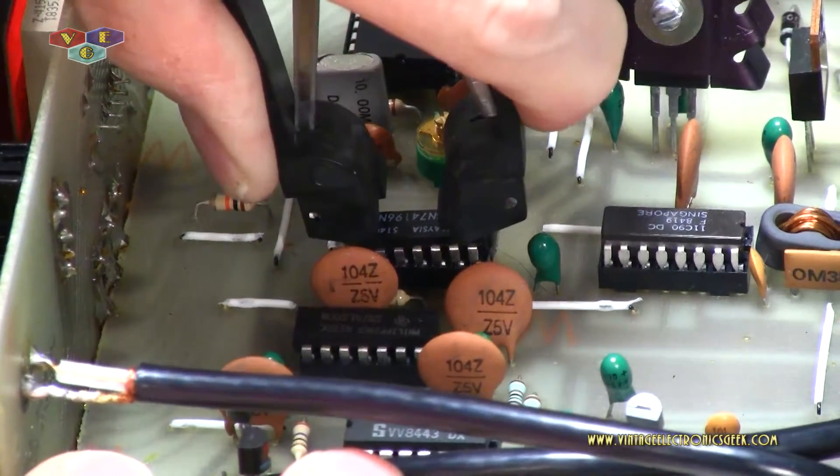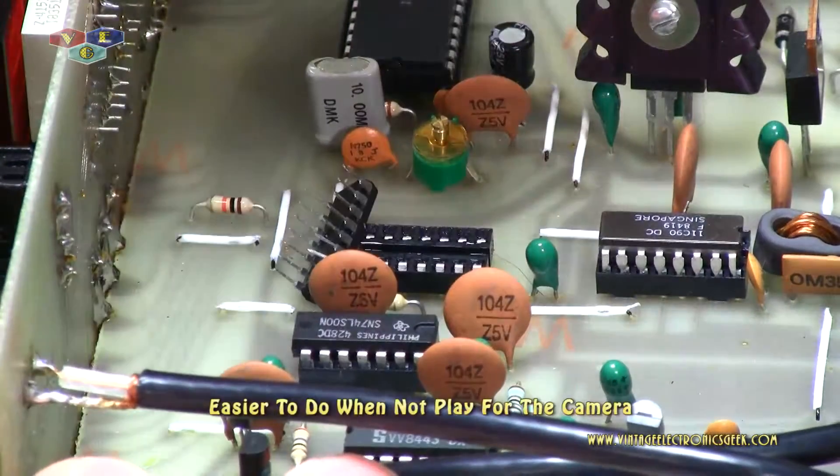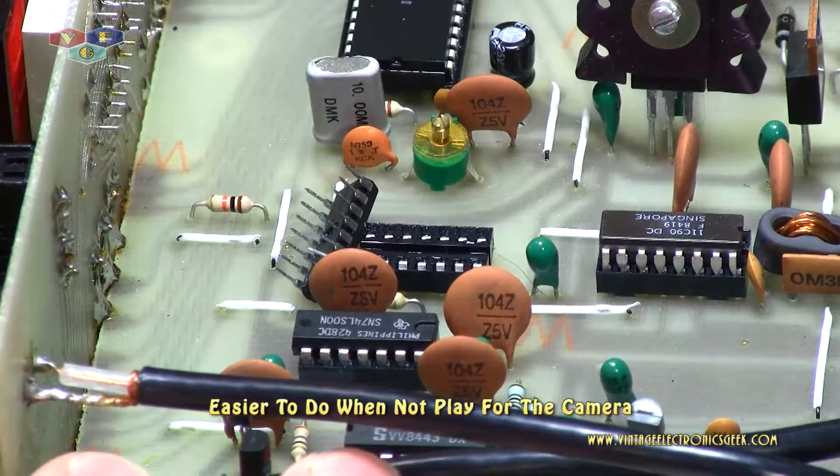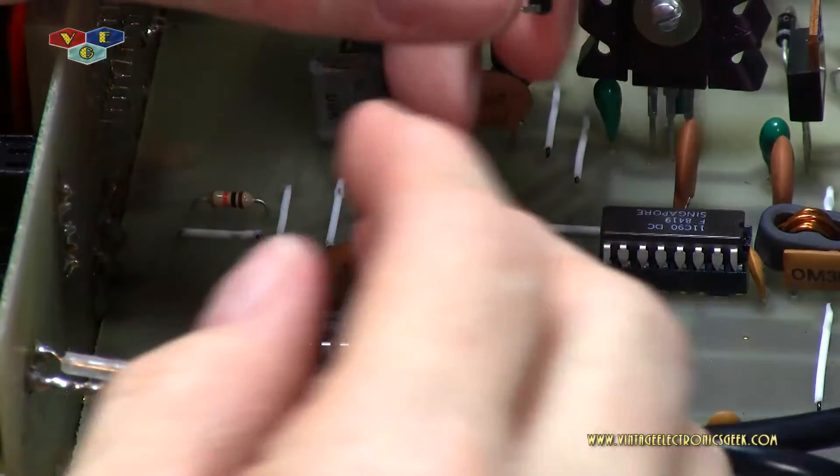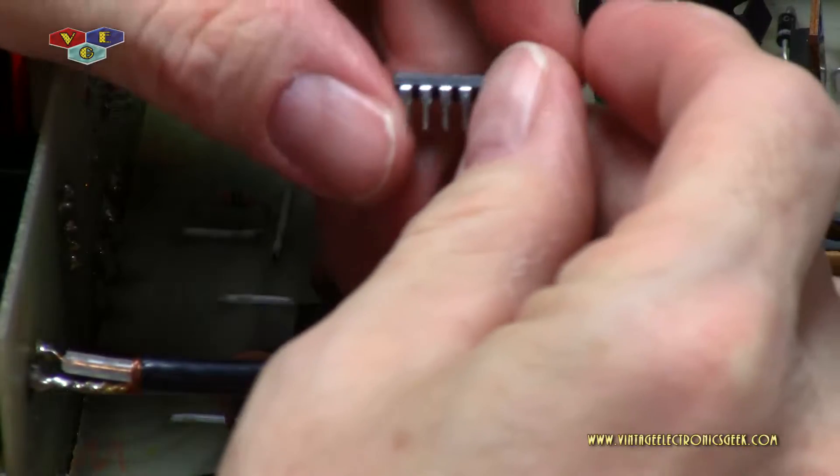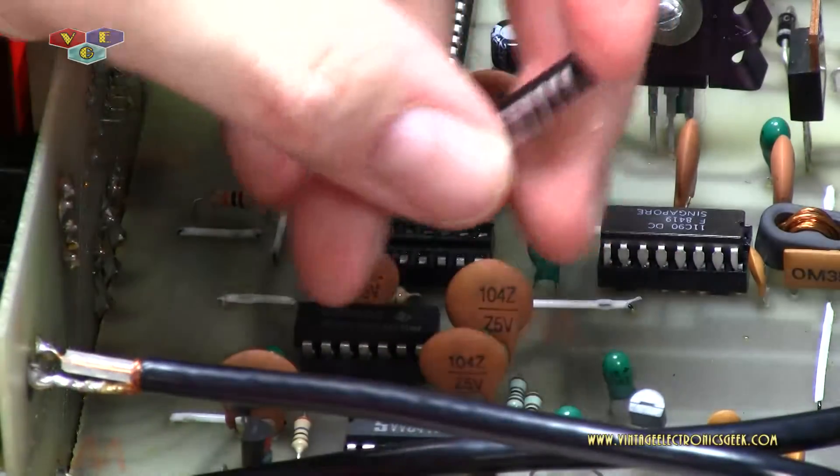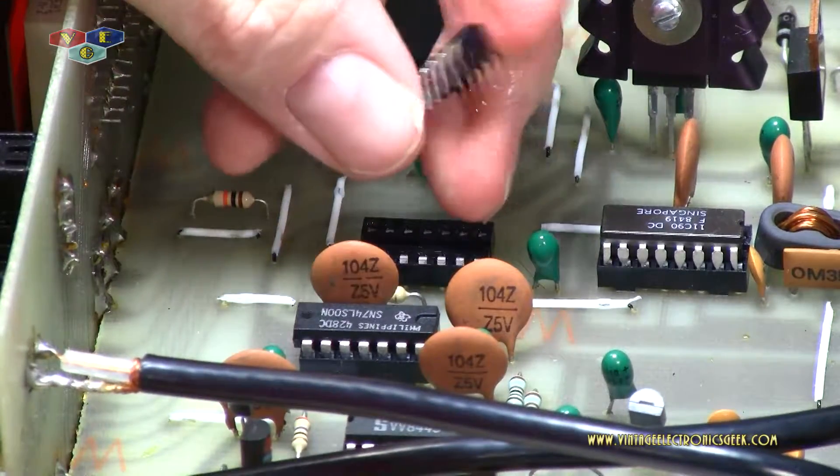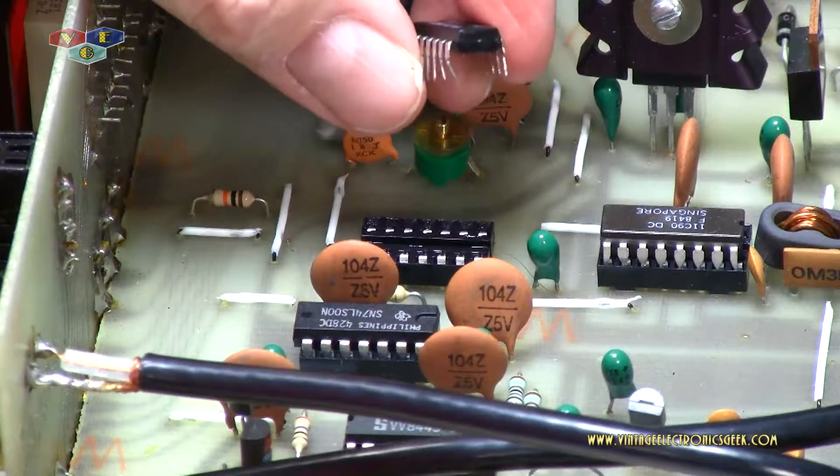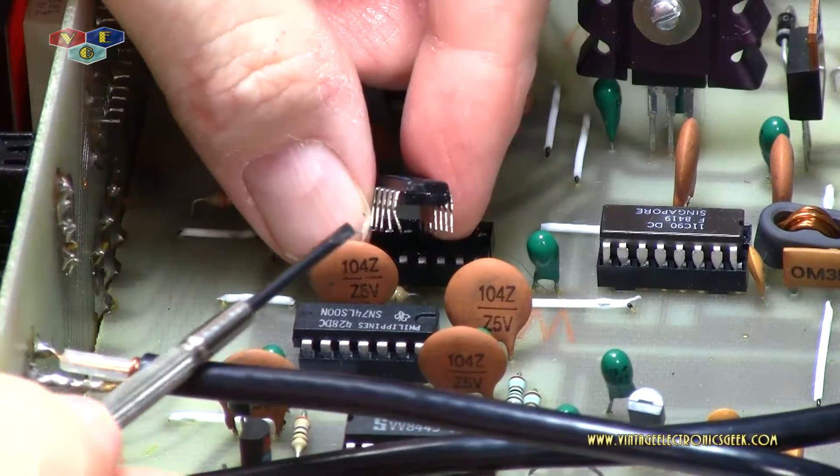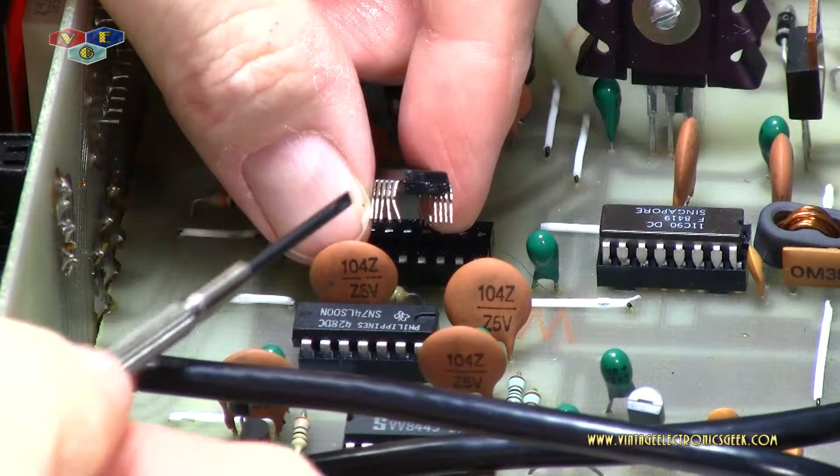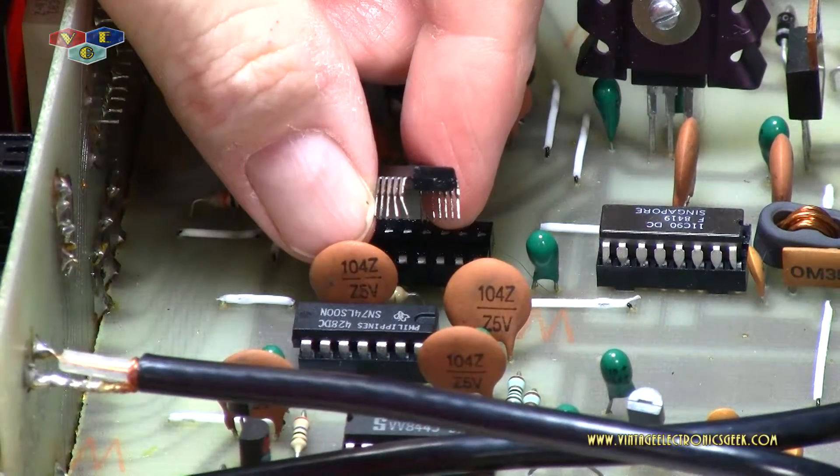And then slowly, just kind of rock it out like such. And then, generally, it will stay within the tool. But that's a good example. As you can see, in this scenario, we only have one bent leg compared to all of them being bent.